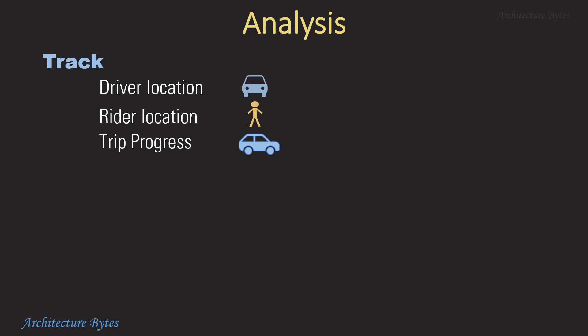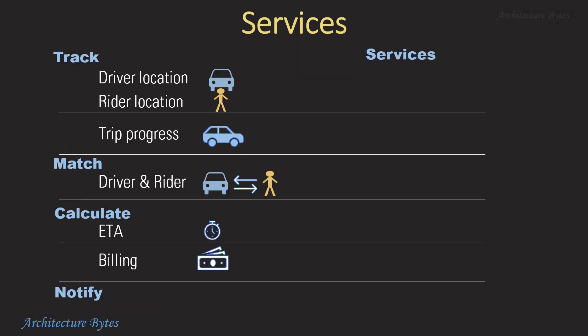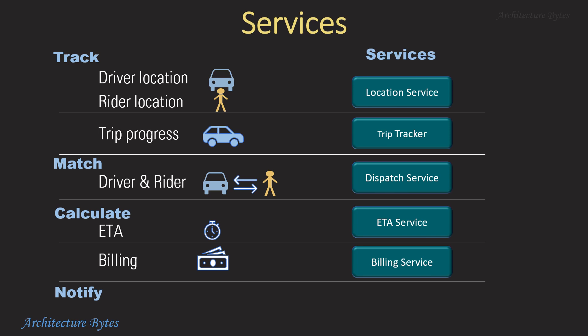At a high level, we need to track driver location, rider location, and trip progress — as well as match driver to a rider, calculate ETA, do billing, and so on. Here are some of the services we would need: a location service to track and search locations, a trip tracker service to track trip progress, a dispatch service to find nearby drivers for a rider, an ETA service to calculate ETA between two locations, a billing service, and a notification service to send messages to drivers and riders. Each of these services will be implemented as a microservice.